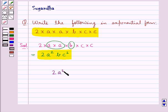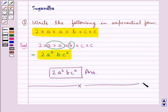2A square BC square is our final answer. This completes the session. Hope you have understood the solution of this question.